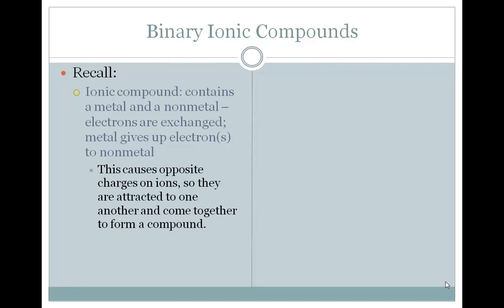Remember, an ionic compound contains a metal and a nonmetal. Electrons are exchanged here. The metal gives up the electron, loses a negative charge to become positive, and the nonmetal takes that electron, gains a negative charge to become negative. This causes opposite charges on ions, so they are attracted to one another and come together to form a compound.